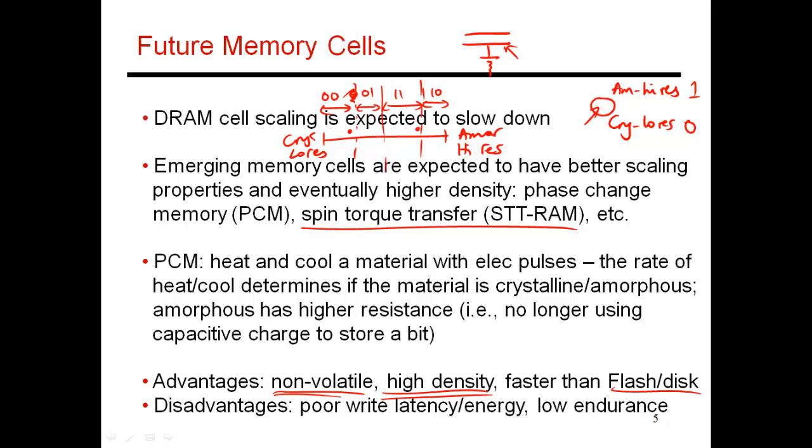What are the main disadvantages of using something like PCM or STT RAM? So firstly, they have a much higher latency and energy penalty when performing writes. Because the write involves this heating and melting process of the material, and so it takes a really long time to do it, and it also consumes a lot of energy. This write process is also problematic, because as you heat and cool these devices, they ultimately break down.